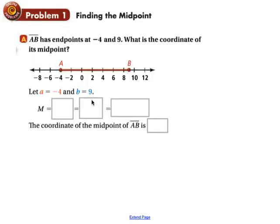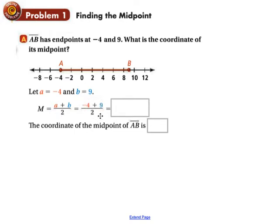Here's another example. Segment AB has endpoints at negative 4 and positive 9. What's the coordinate of its midpoint? We let A be negative 4 and B be 9. The formula is the sum of A and B divided by 2 — finding the average. Plugging in: negative 4 plus 9 is positive 5, divided by 2 is 2.5. So the coordinate of the midpoint is 2.5.